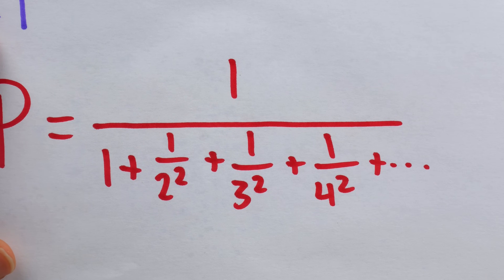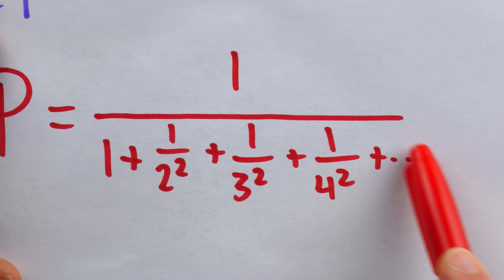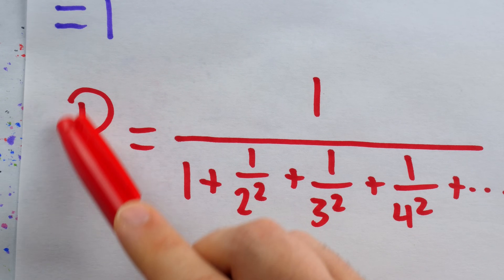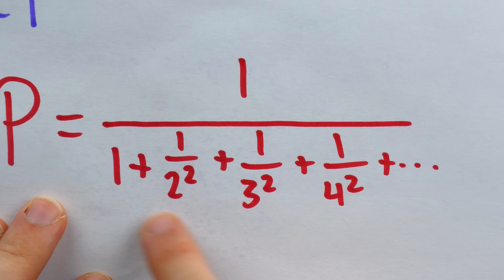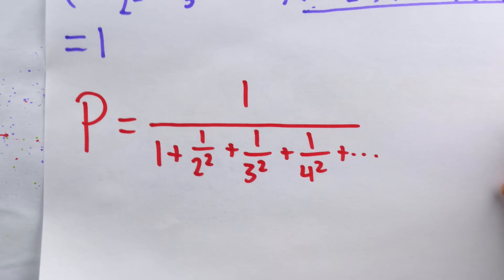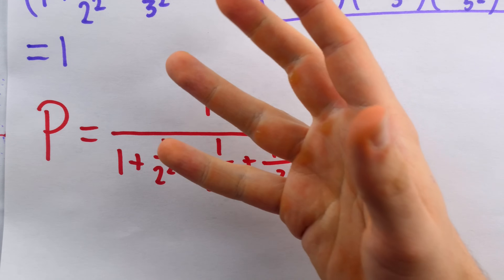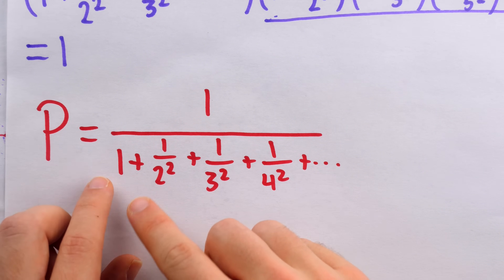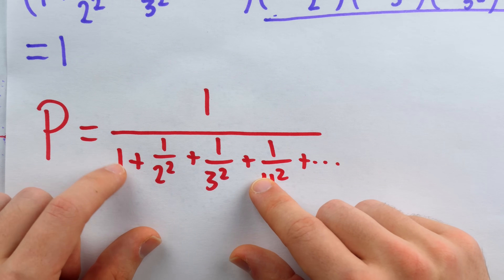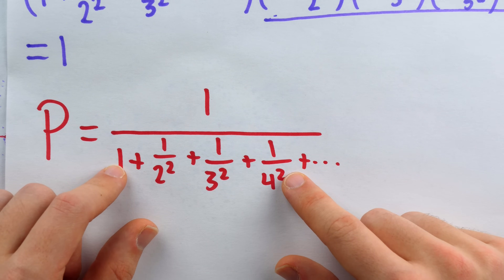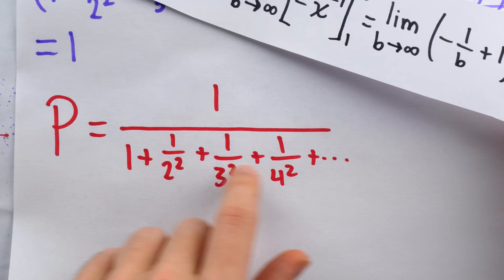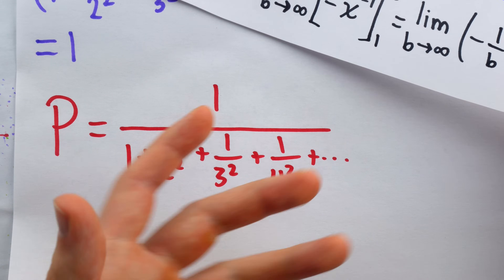In 1650, Pietro Mengoli posed this as a problem — now known as the Basel Problem — to figure out what this infinite sum is equal to. Calculating the value ourselves is a little beyond the scope of this video, but for those familiar with Calculus 2, we can show using the integral test that this series does converge. This is a p-series with p equal to 2, so it doesn't just get arbitrarily large — it converges to some particular value.